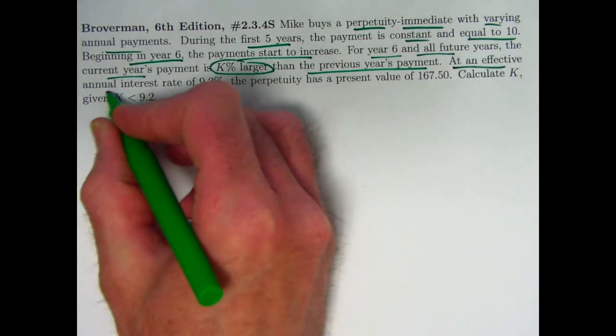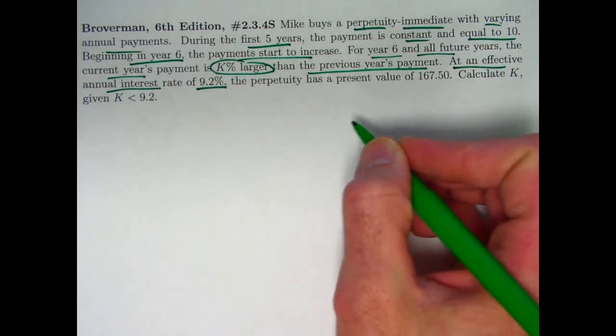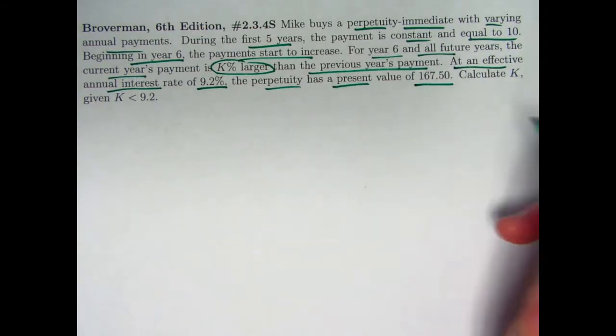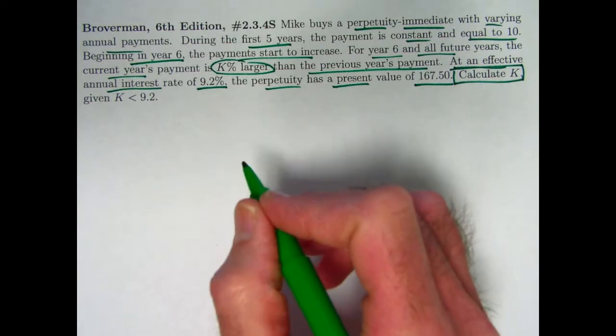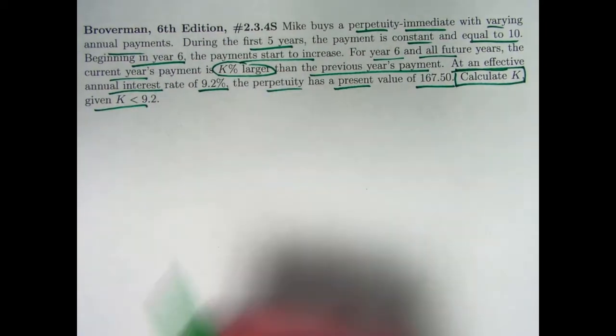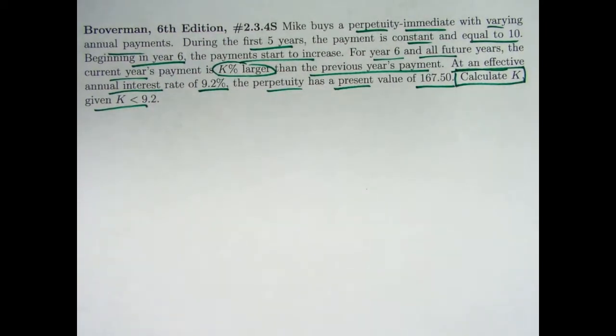At an effective annual interest rate of 9.2%, the perpetuity has a present value of 167.5. Calculate K, this inflation adjustment percentage. Given that K is less than 9.2, that's going to be a necessary assumption to guarantee we can solve the problem, as we will see.